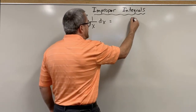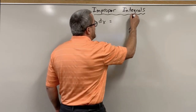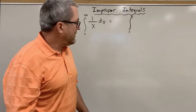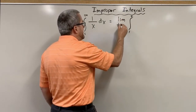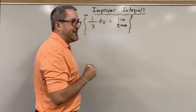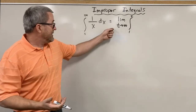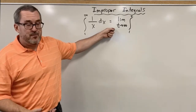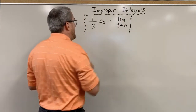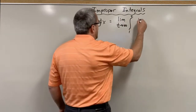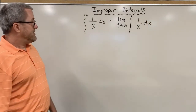Instead of saying the integral from 1 to infinity, we say the integral from 1 to t, and then we ask what happens as t goes off to infinity. Since we're accumulating area out to infinity, we're really talking about a limiting process, an infinite limit. So let's notate that clearly: t is going off to infinity, and we're going to integrate 1 over x dx from 1 to t as t goes off to infinity.